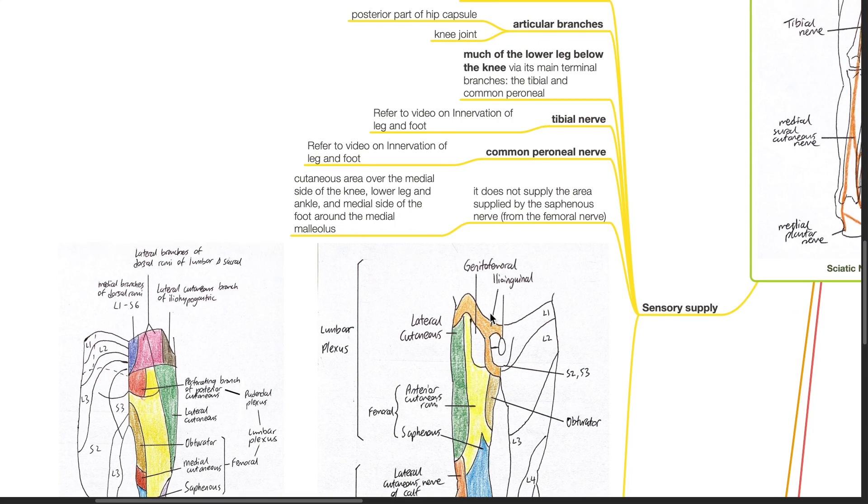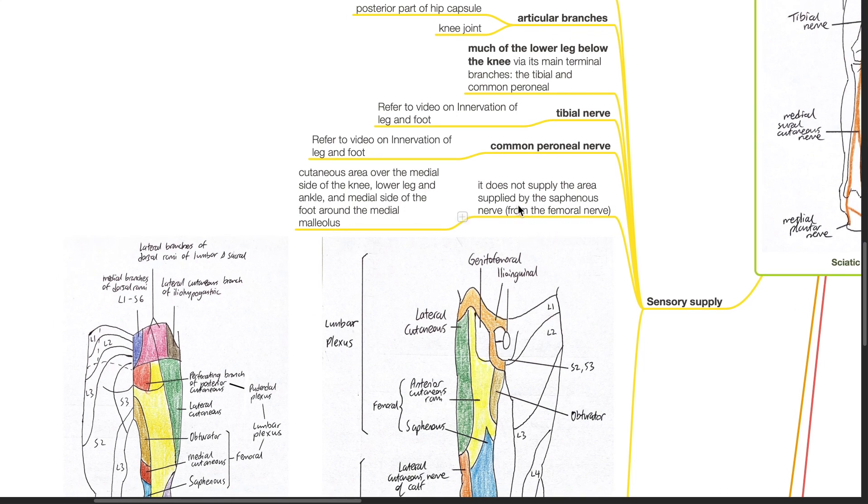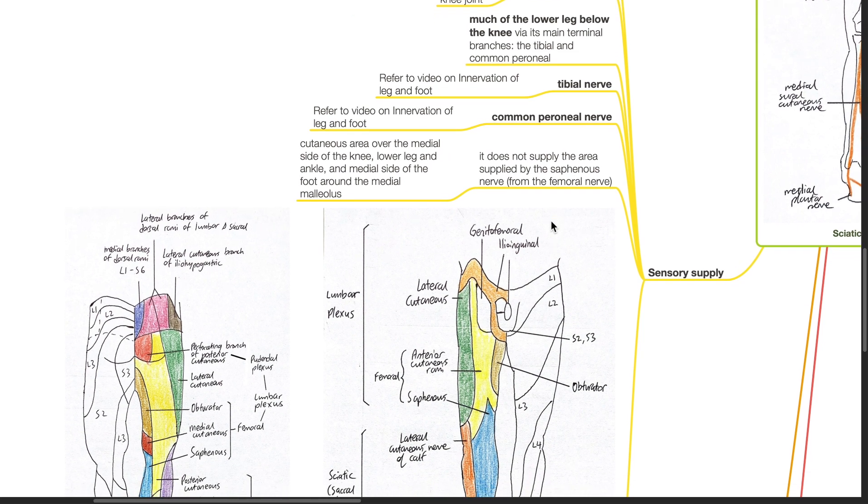The sciatic nerve does not supply the area supplied by the saphenous nerve which branches from the femoral nerve. The saphenous nerve supplies a cutaneous area over the medial side of the knee, lower leg, ankle and the medial side of the foot around the medial malleolus.